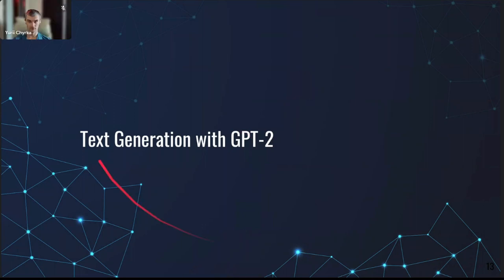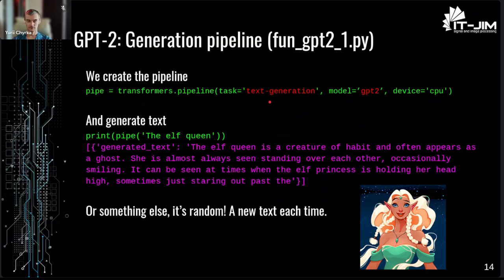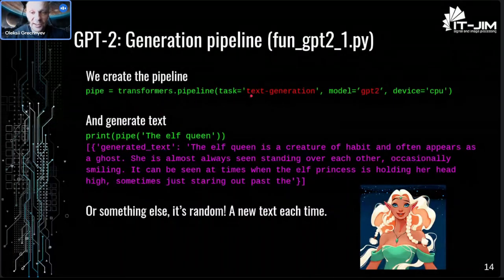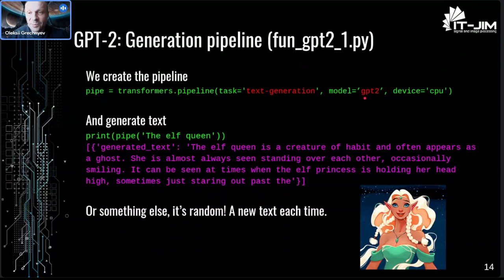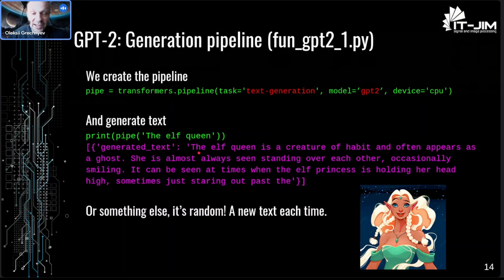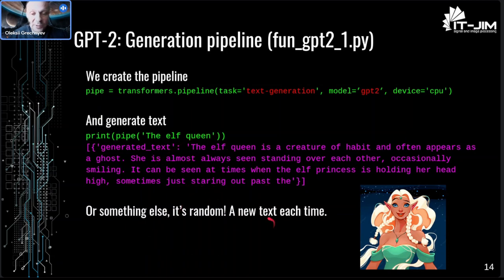Let's now look at text generation with GPT-2. With pipelines it's also pretty simple: the task is called 'text-generation' and the model is simply 'gpt2'. Then you generate text by calling the pipeline on a prompt and you get a longer generated text. Of course if you run the code you will get a different result each time, because text generation is random by default.